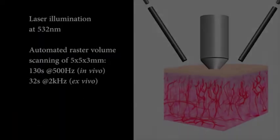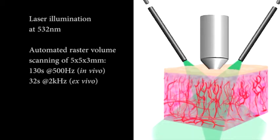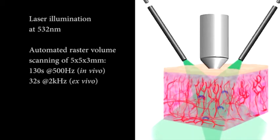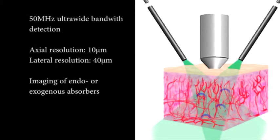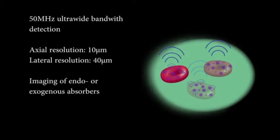During scanning, the tissue is illuminated with a 532 nanometer laser. Currently planned developments for 500 kilohertz lasers will reduce scan times to 0.5 seconds. Ultrasound detection enables high axial and lateral resolution of both endo- and exogenous absorbers such as hemoglobin.